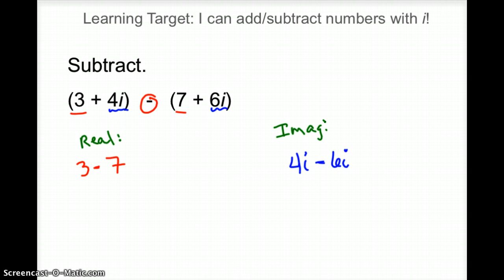So we're not adding anymore, we're subtracting. So 3 take away 7, so you're in the hole. That takes you to negative 4. And then 4i, take away 6i, again you're in the hole, 2i, so negative 2.